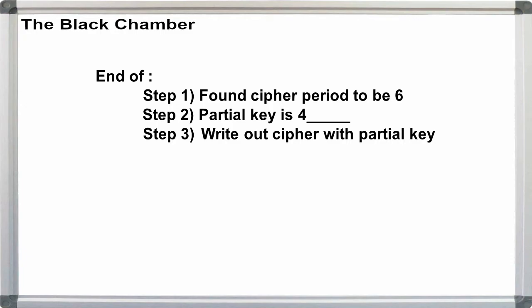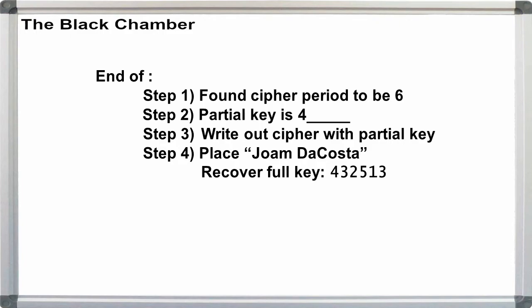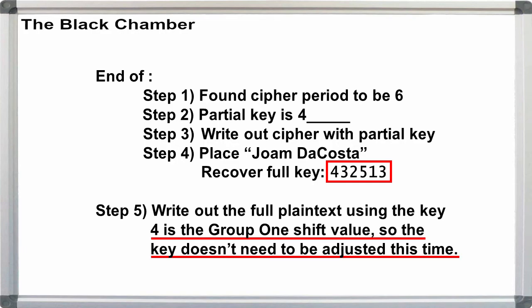So we've finished step 3 in writing out the cipher with the partial key, and step 4 in placing Yoam da Costa and recovering our full key. That just leaves step 5. Write out the full plaintext message with our recovered key, 432513.